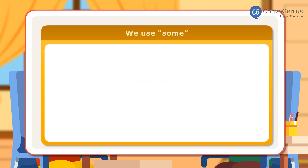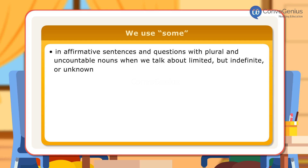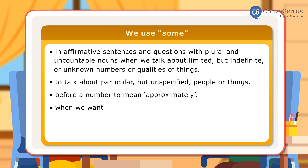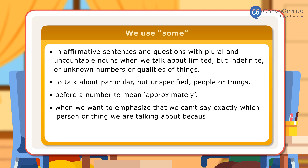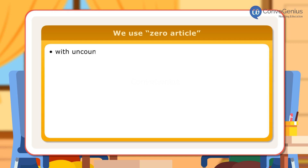Usage: We use some in affirmative sentences and questions with plural and uncountable nouns when we talk about limited but indefinite or unknown numbers or qualities of things. To talk about particular but unspecified people or things, before a number to mean approximately, or when we want to emphasize that we can't say exactly which person or thing we are talking about because we don't know or can't remember, we use some instead of a or an with a singular noun.